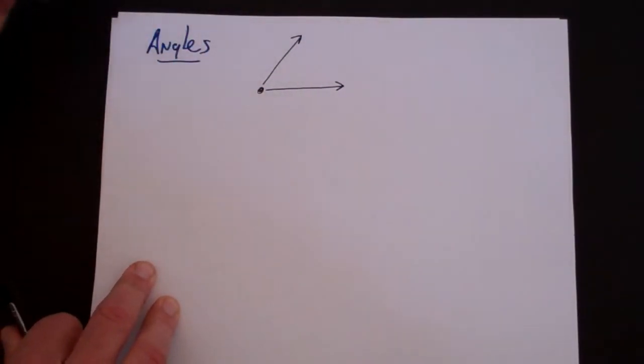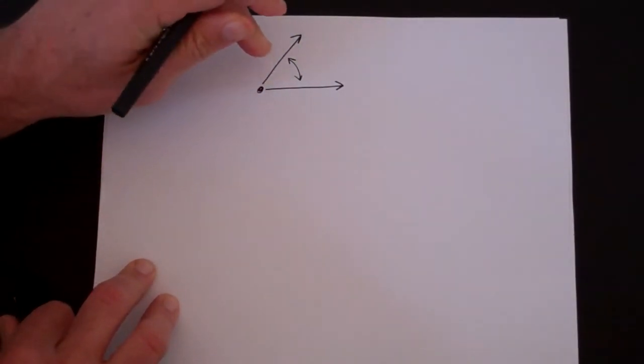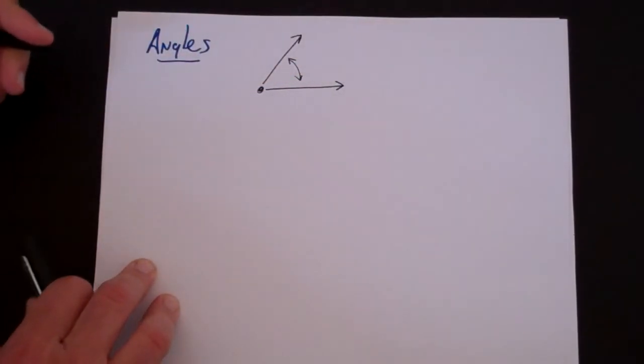If you think about angles, angles are defined by two rays with a common endpoint or vertex. And this is what we define to be the angle here. It has a side, a side, a vertex, and a measure.